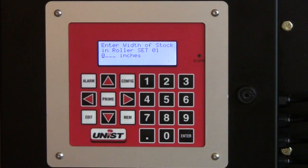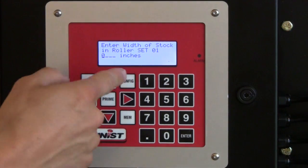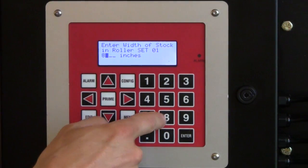The next question is what's the width of the stock in roller set number one. So for this particular job we're using a 12 inch wide roller. If we were going to be using one of our wider roller units which uses staggered roller sets, it would ask the user for each one of those individual sets. But this is only a 12 inch wide unit. And let's say for this individual set we're going to be running 8 inch wide coil.